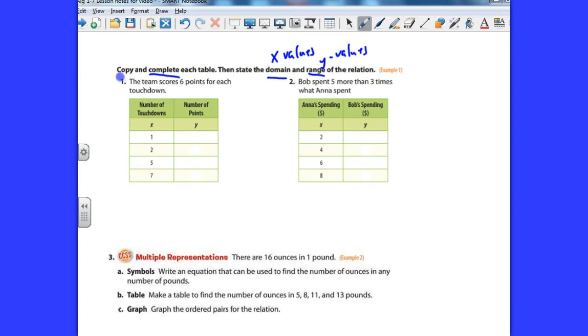So number one, number one says a team scores six points for each touchdown. Well, football players, before you go crazy here, they're not talking about extra points. One touchdown is actually six points, and then the extra point could be one or two if you do it from a regular play, one if you kick. So if I have number of touchdowns, that's my x column, which they have right here, one touchdown would be six points.